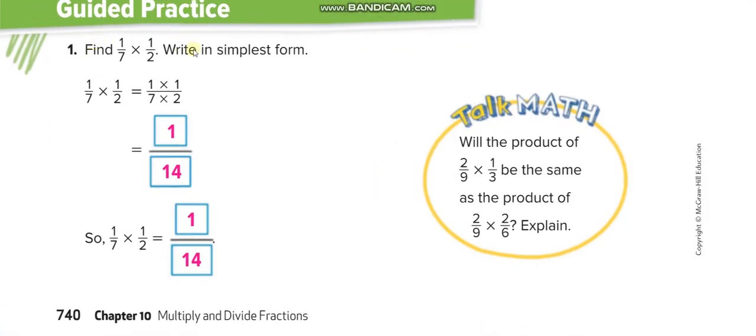Here, multiply the numerators: 1 times 1 equals 1, 7 times 2 equals 14, giving 1/14. Will the product of 2/9 times 1/3 be the same as the product of 2/9 times 2/6? Yes, it will be the same. You can multiply both and find you get the same answer. In one you have to simplify, in the other you get the simplified answer.